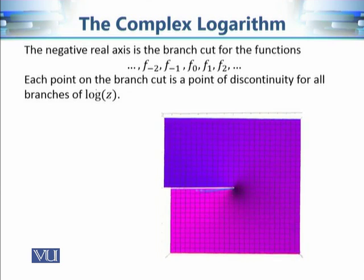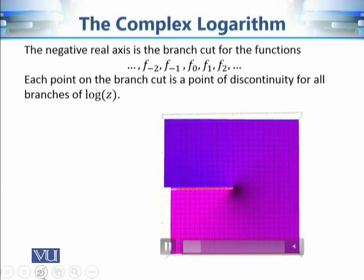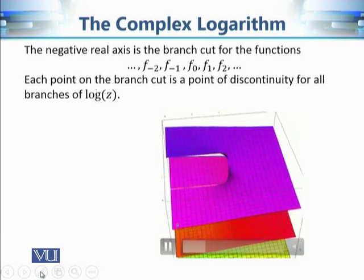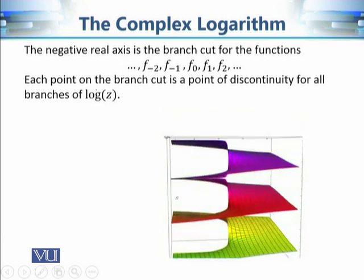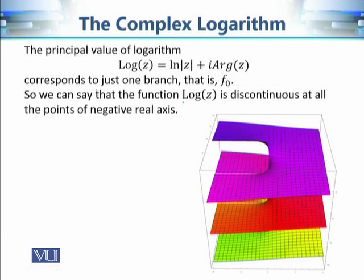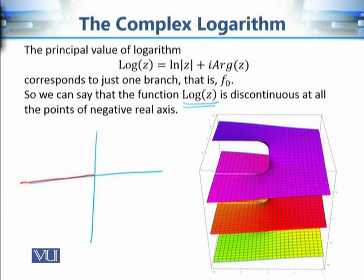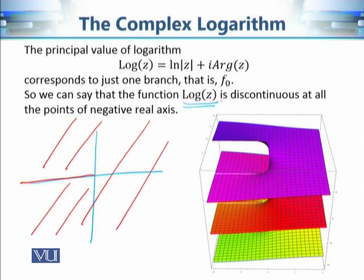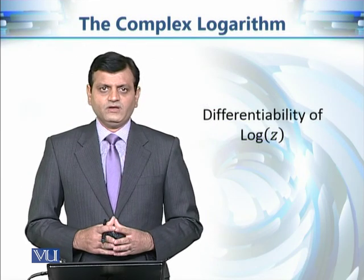Each branch is continuous apart from the points on the branch cut. So we can say that the principal value of the logarithm is a continuous function apart from the points on the negative real axis, which is the branch cut. That covers the continuity of the principal value of the logarithm.